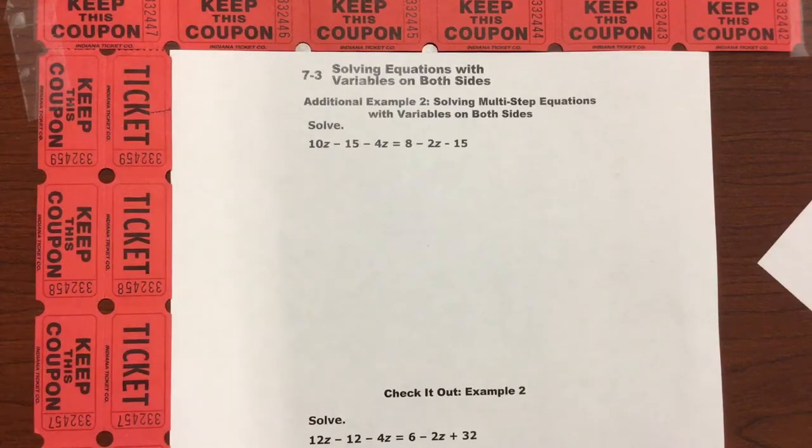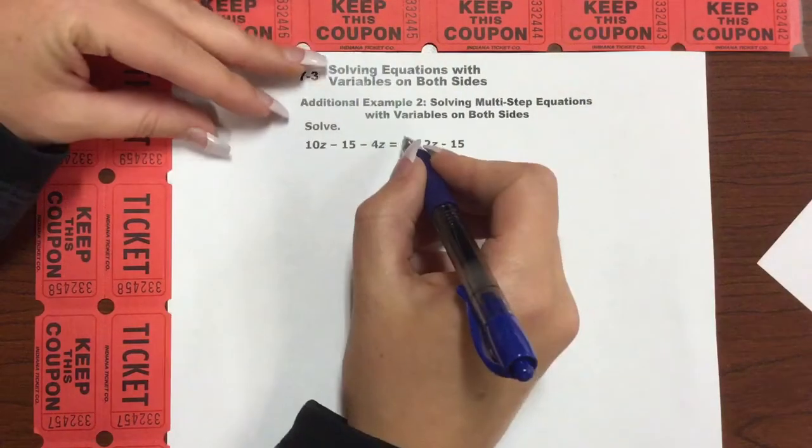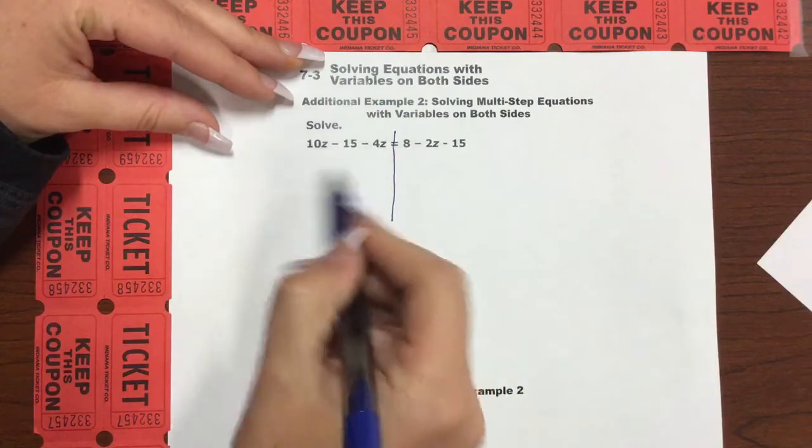All right, we are back solving multi-step equations with variables on both sides. This is example two. So we're just going to keep going, draw a line, and we need to simplify.